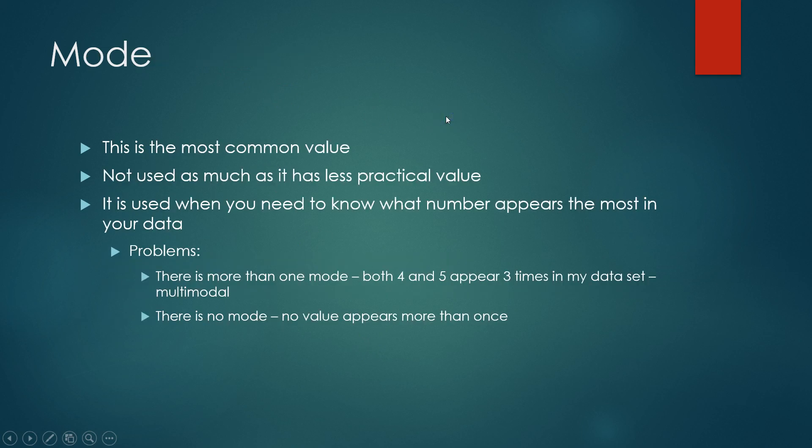The next one we look at is mode. And mode is simply the most common value. It's the one that shows up the most. And this could be useful if you're measuring, for example, a list of people in three different groups. And group 2 just shows up the most. So for whatever reason that's important, and group 2 is your mode, or the number 2 could be your mode. Mode is typically a numeric value. It's not used as much because it has less practical value. It's only really valuable in certain situations. But it's used when you need to know what number appears the most common in your data. The problem is that there can be either one scenario. There can either be one mode, which is the most convenient and easy way to do it. There can be more than one mode, which you can have, for example, 4 and 5 appear 3 times in the data set. And that is going to give you two modes. It's going to be bimodal or multimodal if you have more than two. Or there's no mode. There's no number that appears more than one time in the data set. So there really is no mode.